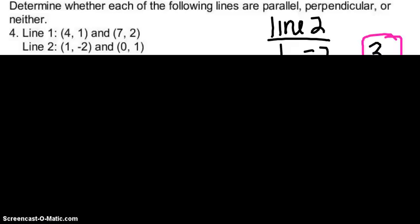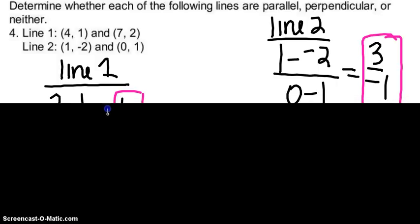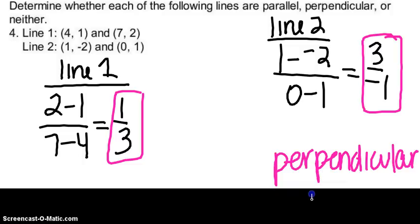Let's look at some examples. Question number 4 says determine whether the lines are parallel, perpendicular, or neither. I find the slope of line one — I get 2 minus 1 divided by 7 minus 4, which gives me one third. For line two, I have 1 minus negative 2 divided by 0 minus 1, giving me negative 3 over 1. Since this is the opposite reciprocal — signs changed and fraction flipped — the answer is perpendicular.